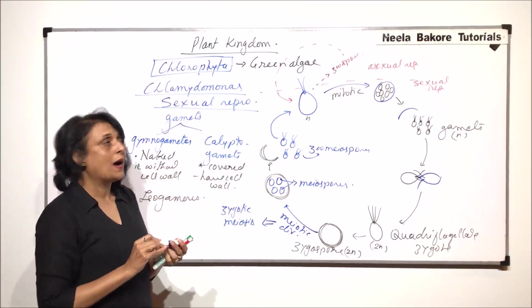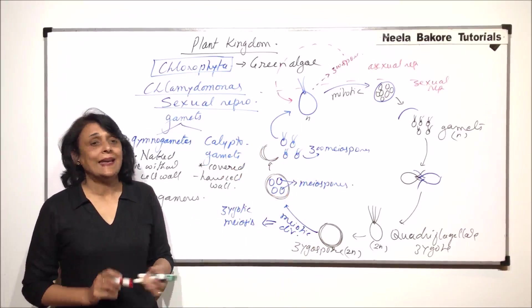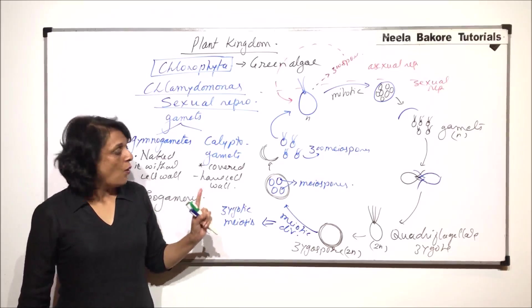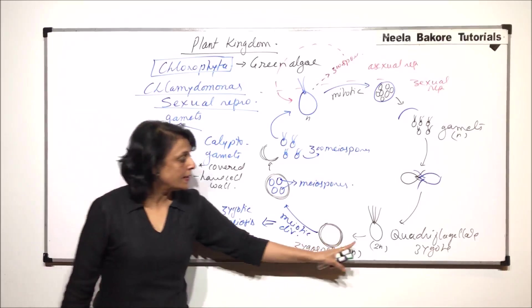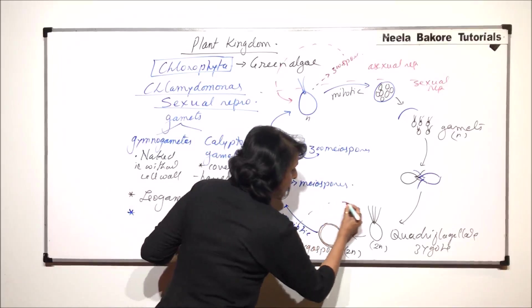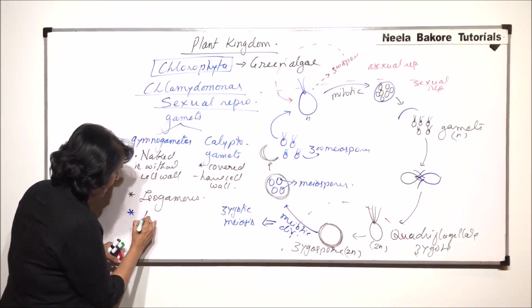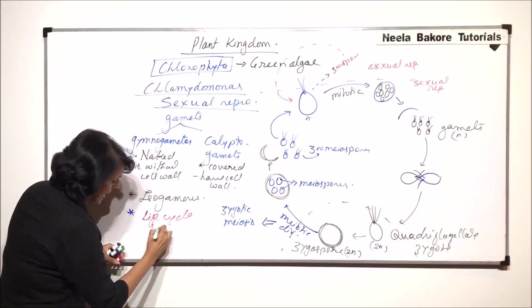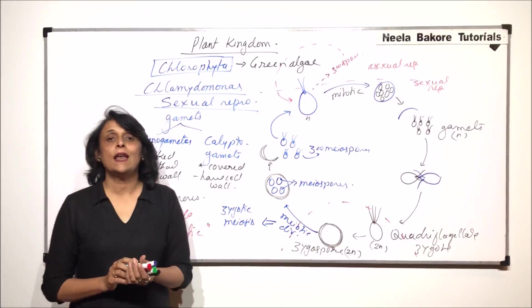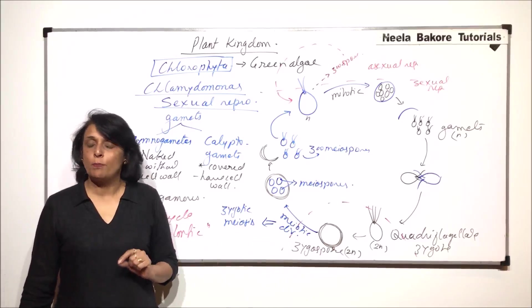If we have to sum up asexual sexual reproduction, or in other words the life cycle of Chlamydomonas, then how many stages are haploid and how many are diploid? Only one stage is the diploid stage: that is zygote and after losing the flagella, the zygospore. This is the diploid part. Rest of the life is spent as haploid cells. The life cycle is haplontic. Haplontic life cycle is where most of the life is spent as haploid stage and there is only one stage which is diploid.